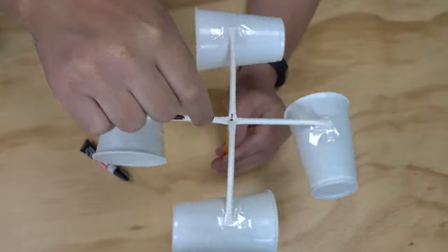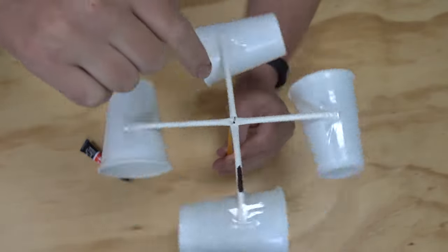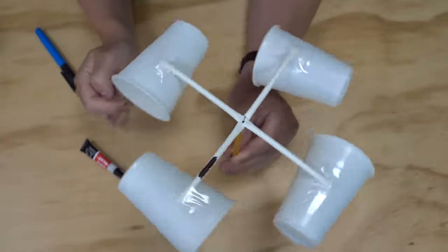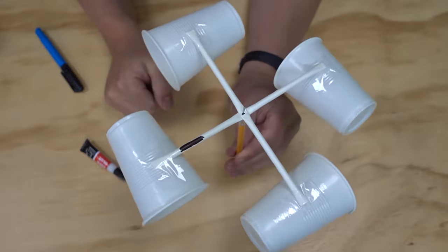Now if it's a really gentle breeze day it might only spin a couple of times in a minute. If it's really windy where you are on the day it might spin a lot of times. But we want to count how many revolutions it does in one minute because we're going to use that to calculate our wind speed.